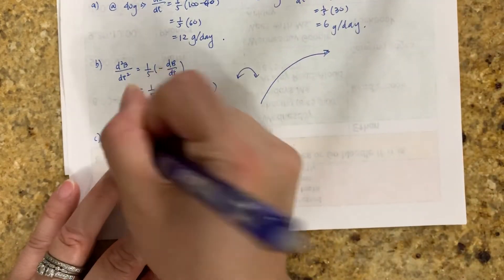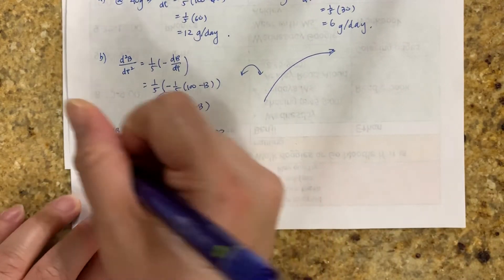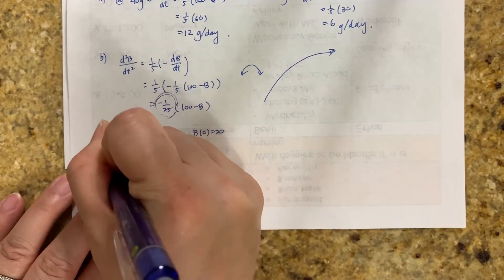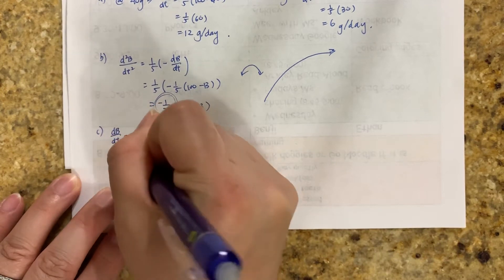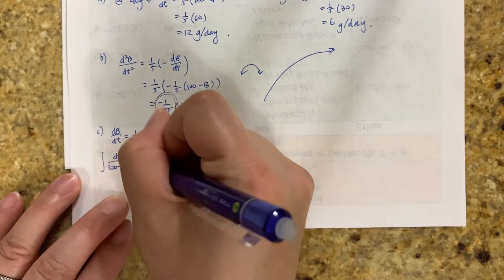So separation of variables. So this is b. You need to divide it over. So db over 100 minus b equals 1/5 dt to the other side. Now take the integral of both sides.